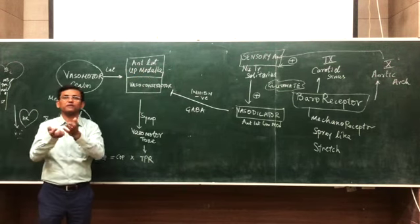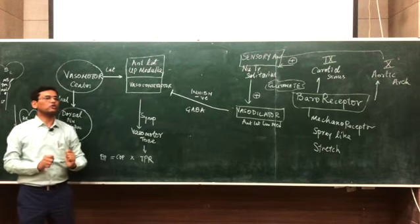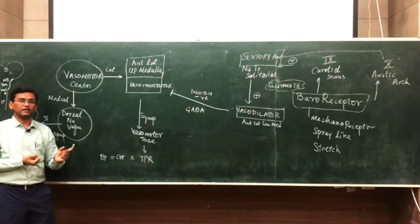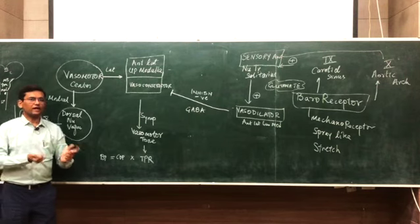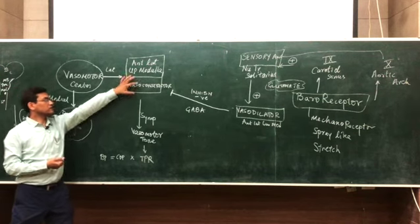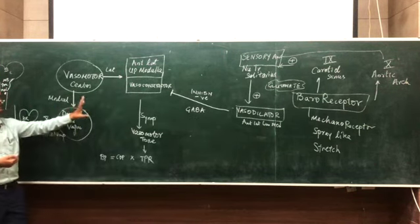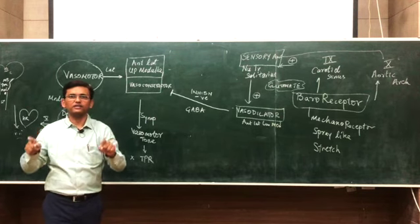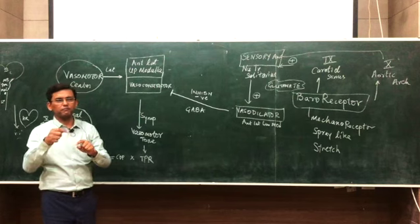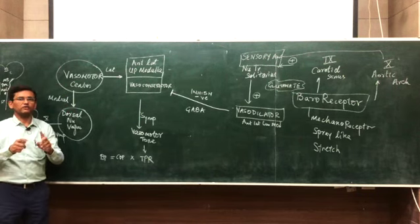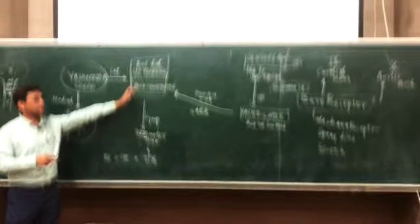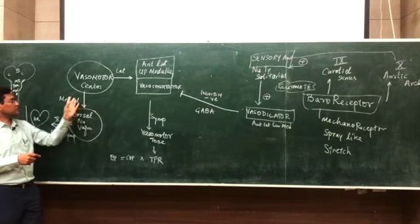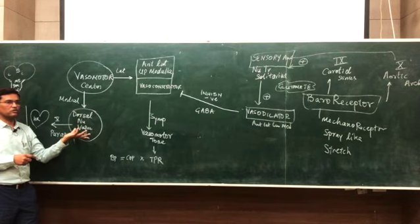The vasoconstrictor area is continuously, persistently firing sympathetically to maintain vasomotor tone and blood pressure. The vasomotor center is a non-specific, diffusely marked area of the medulla and some part of pons, mainly around the reticular system. It has a medial and a lateral part. The lateral part comprises the vasoconstrictor area and vasodilator area; the medial part has the cardio-inhibitory center, which is the dorsal nucleus of the vagus.